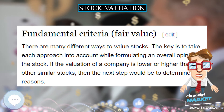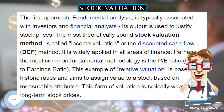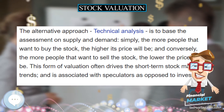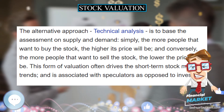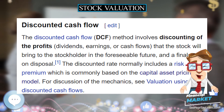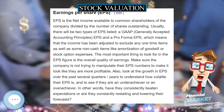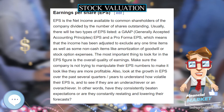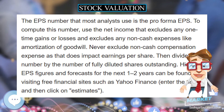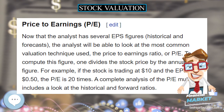EBITDA is a very popular figure because it can easily be compared across companies, even if not all of the companies are profitable. EV to EBITDA. This is perhaps one of the best measurements of whether or not a company is cheap or expensive. To compute, divide the EV by EBITDA. The higher the number, the more expensive the company is. However, remember that more expensive companies are often valued higher because they are growing faster or because they are a higher quality company. With that said, the best way to use EV/EBITDA is to compare it to that of other similar companies.